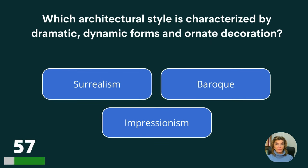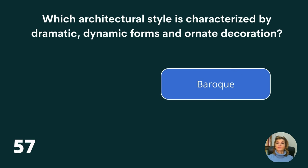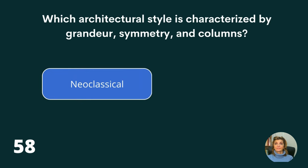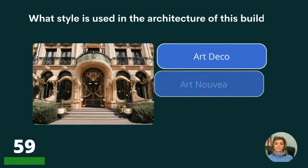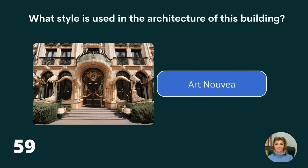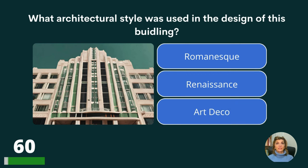Which architectural style is characterized by dramatic, dynamic forms and ornate decoration? Surrealism, Baroque, or Impressionism? Which architectural style is characterized by grandeur, symmetry, and columns? Neoclassical, Abstraction, or Extremism? Which style is used in the architecture of this building? Art Deco, Art Nouveau, or Romanesque? What architectural style was used in the design of this building? Romanesque, Renaissance, or Art Deco?